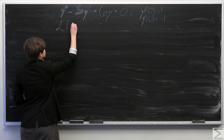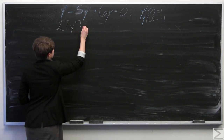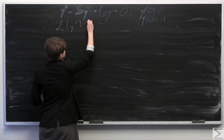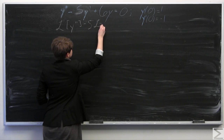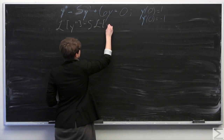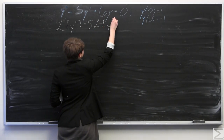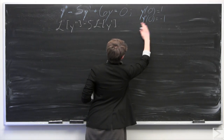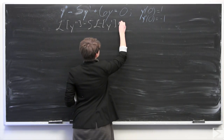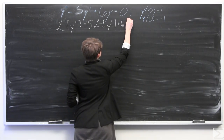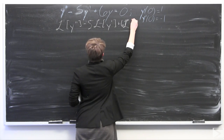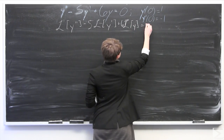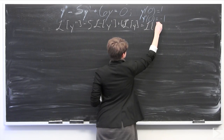So I take the Laplace transform of y double prime, minus 5 times the Laplace transform of y prime, plus 6 times the Laplace transform of y, equals the Laplace transform of 0.